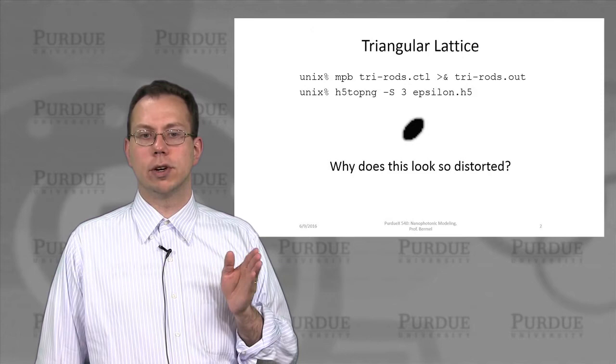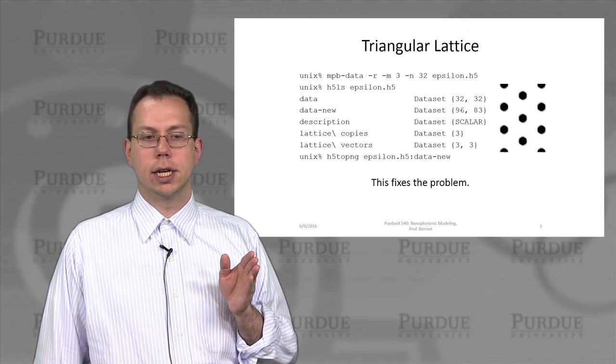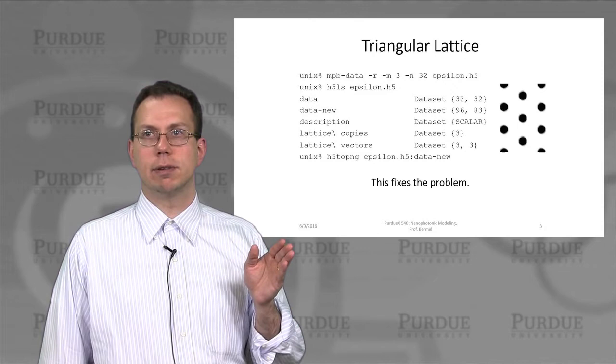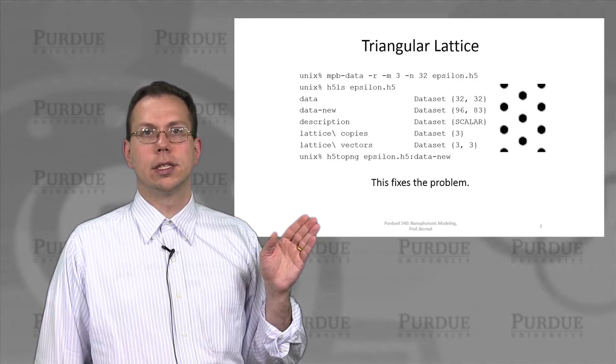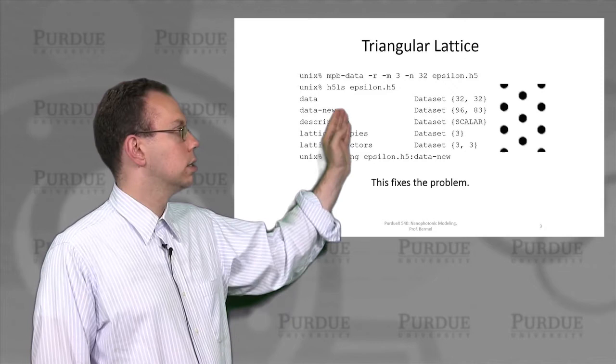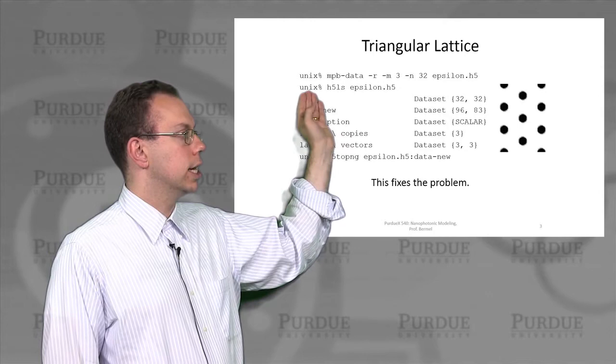This is a big problem. So it turns out that actually this is coming from a misinterpretation by the H5 to ping command line of the actual output in the basis that was shown there as different from the Cartesian basis. And so that can actually be fixed using a separate free utility called MPB data, which is shown up here. And so then you basically would use these command line parameters to set the number of periods that are used and the resolution and so on.